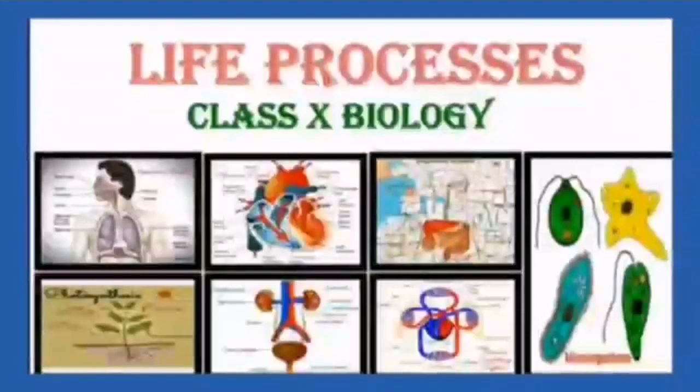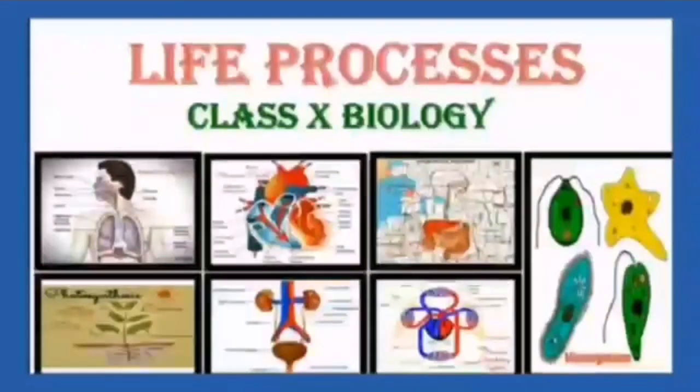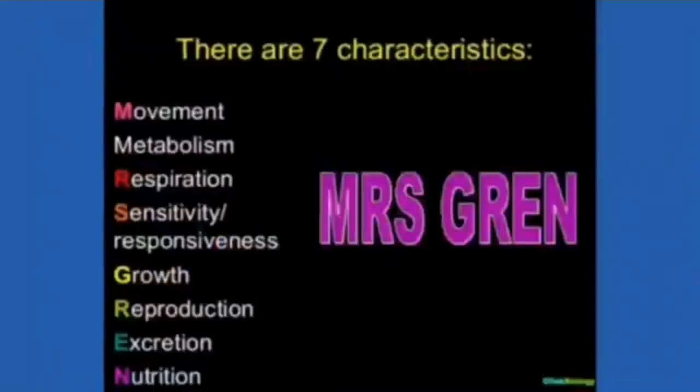Though it is very difficult to define life and living beings, we can see that life is cell-based, self-regulated complex system of molecules where chemical reactions are going on all the time. Now what are the different characteristics of living things or what are the various characteristics of life?